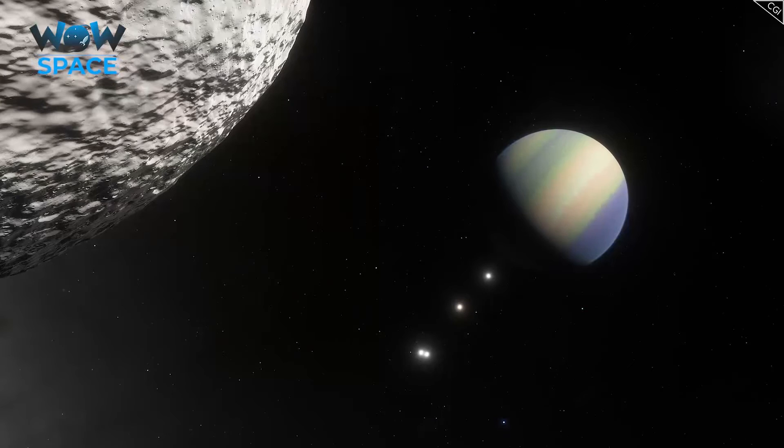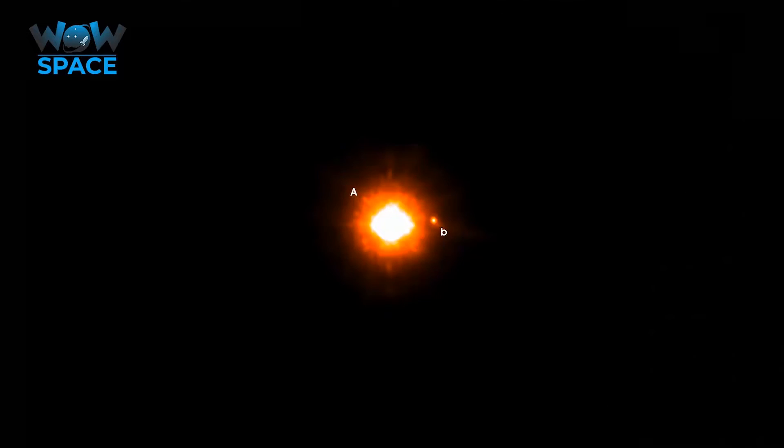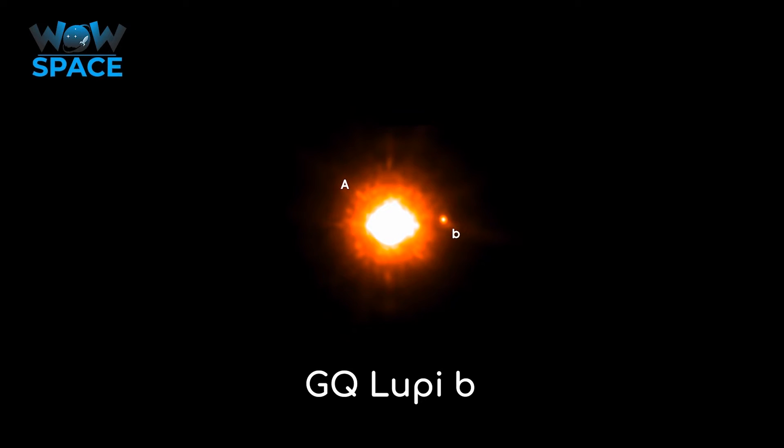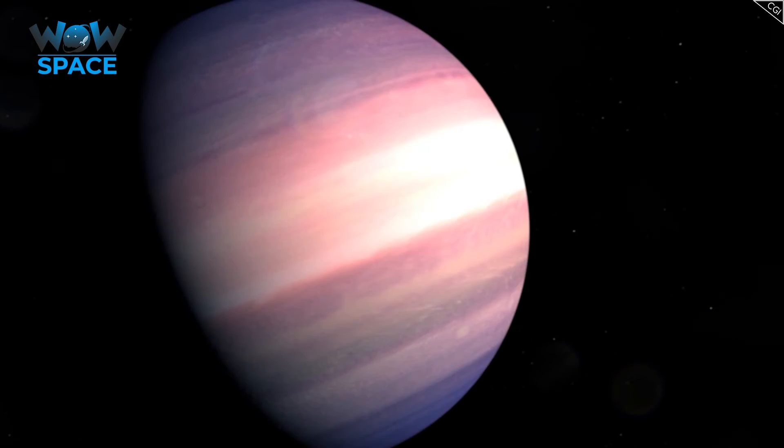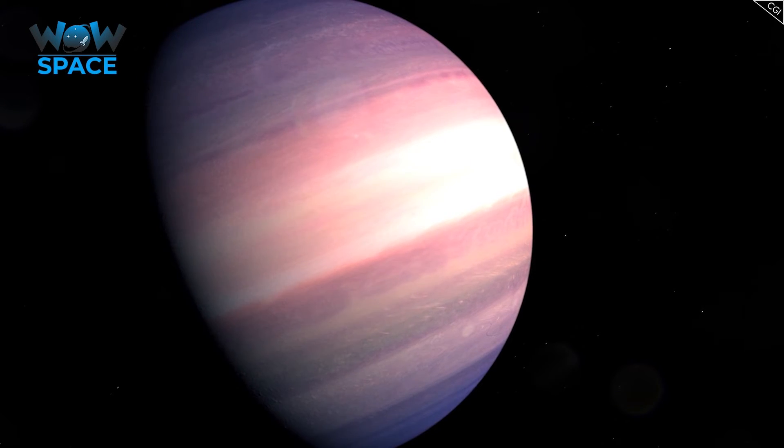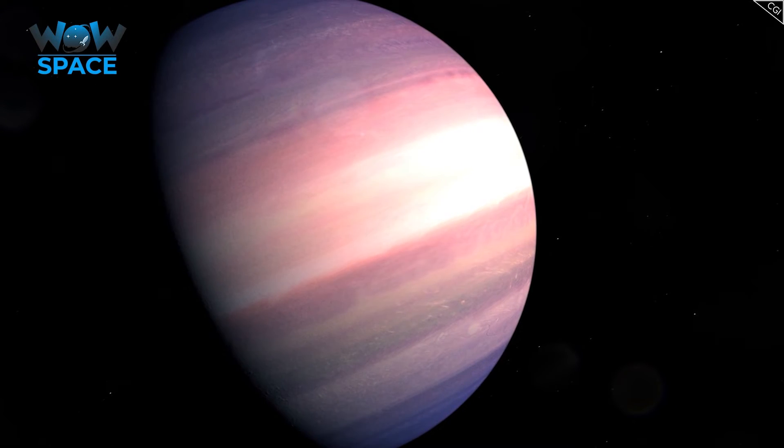What is the biggest exoplanet that we know of? The answer is most likely GQ Lupi B. It is another directly imaged exoplanet, which again means we don't have a good grasp on its physical characteristics. From the margins of error involved, it could be a brown dwarf, but it's probably the largest exoplanet we know of. Scientists have estimated its radius to be 3 times the size of Jupiter, but again, there are margins of error involved.